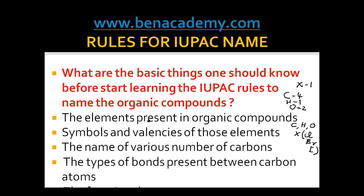The third thing to know is the names for various numbers of carbons. If the number of carbons is 1, it is known as Meth. If the number of carbons is 2, it is Eth. If the number of carbons is 3, it is Prop. If the number of carbons is 4, it is But. If the number of carbons is 5, it is Pent. For the 10th standard level, knowing up to 5 is more than enough.